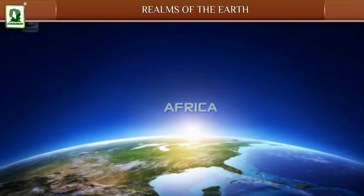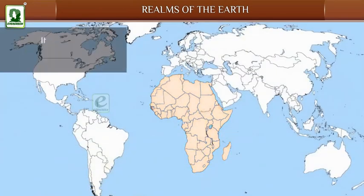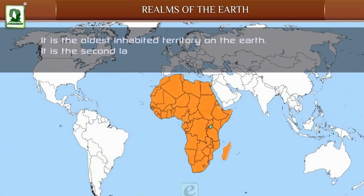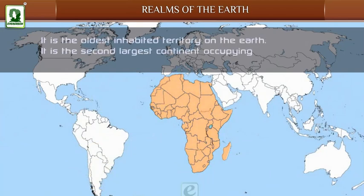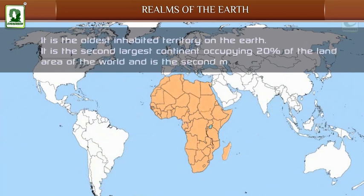Africa: It is the oldest inhabited territory on the earth. It is the second largest continent, occupying 20% of the land area of the world, and is the second most populous continent.